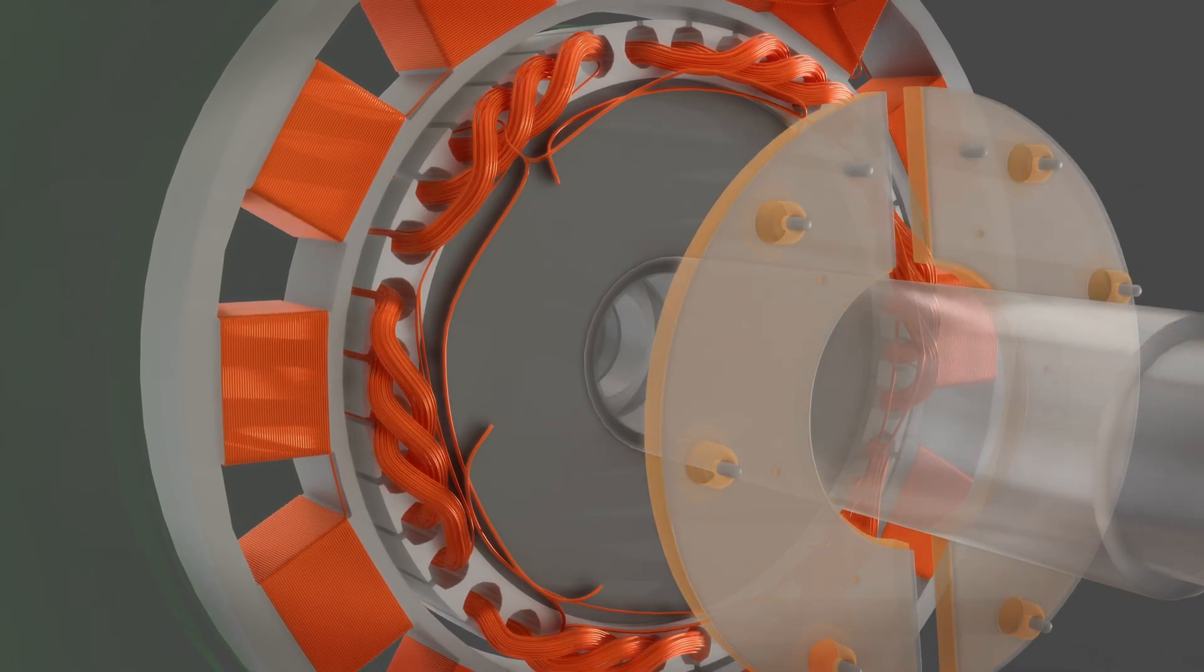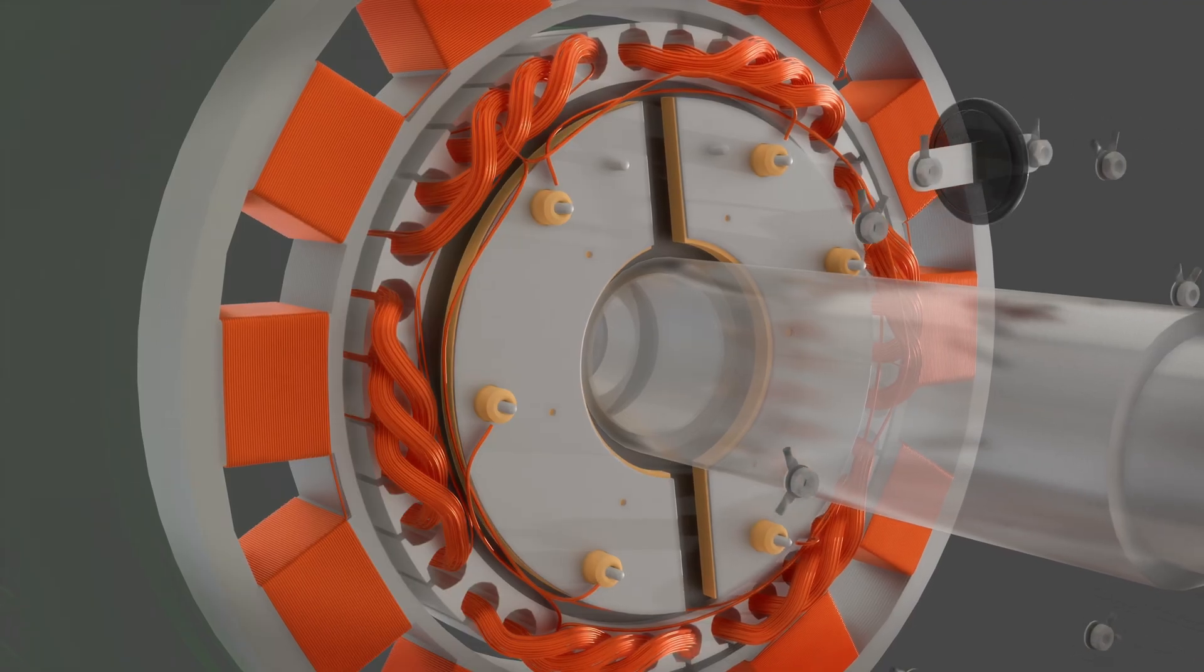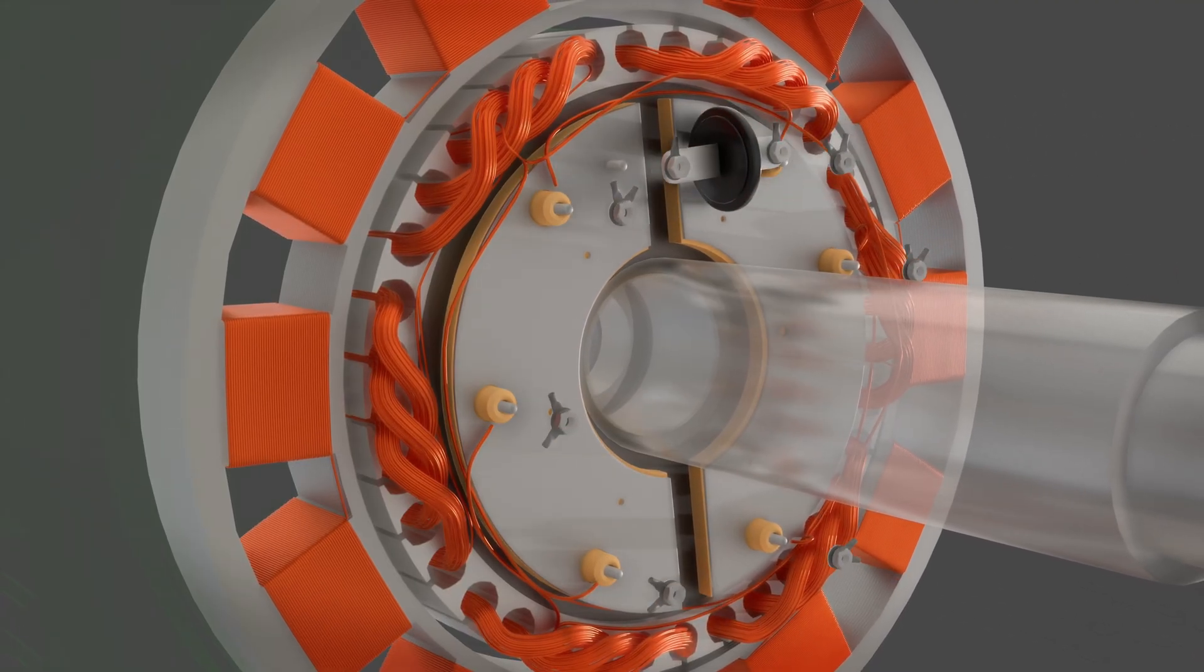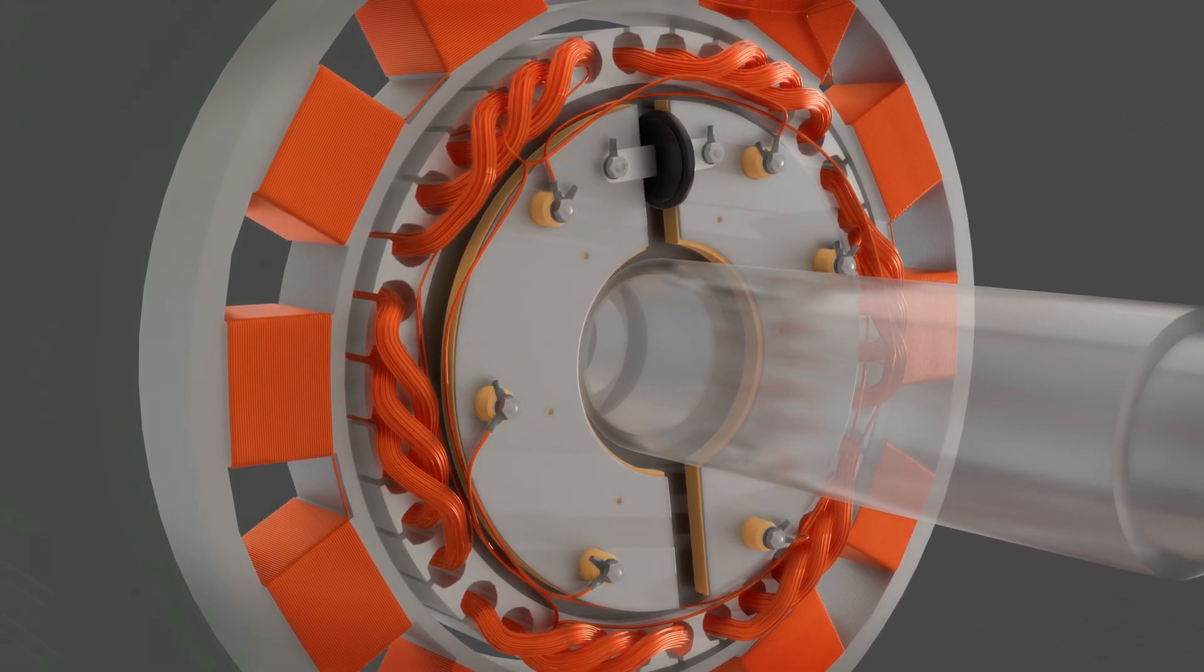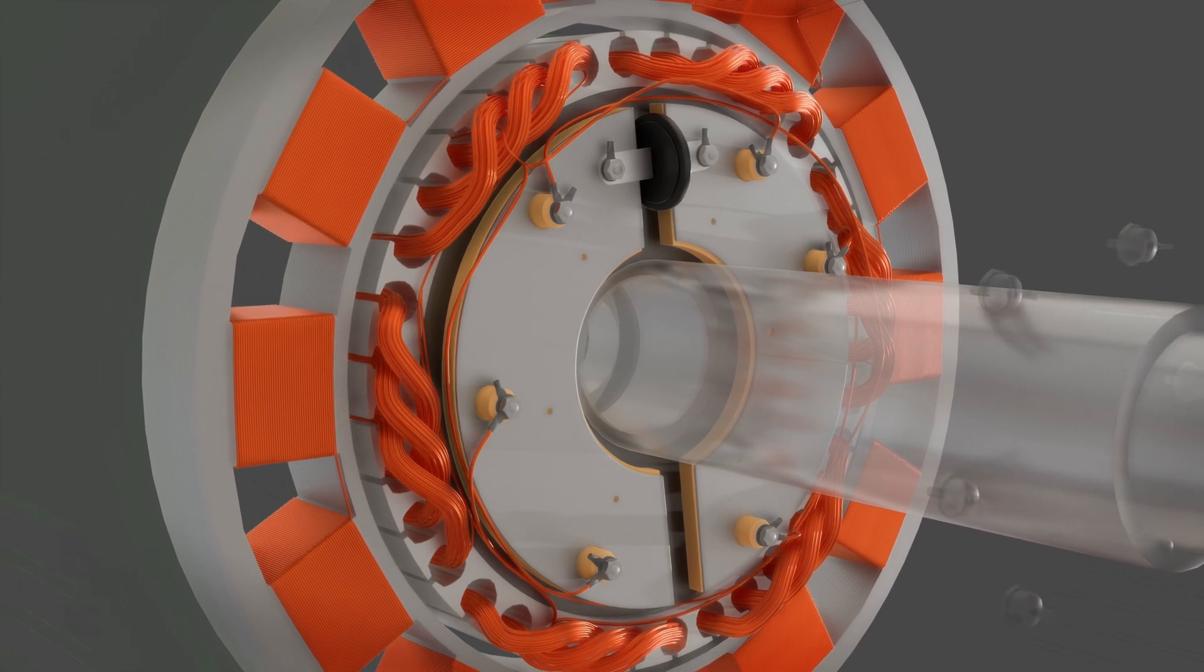Therefore, rotating rectifier diodes are used to convert AC to DC current. These rectifier diodes are mounted directly on the exciter rotor and rotate with it. Full-wave bridge rectification is used to convert AC to DC current.